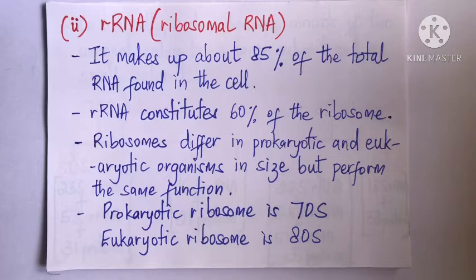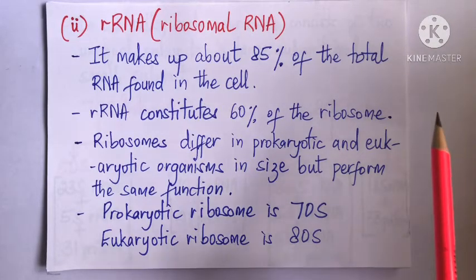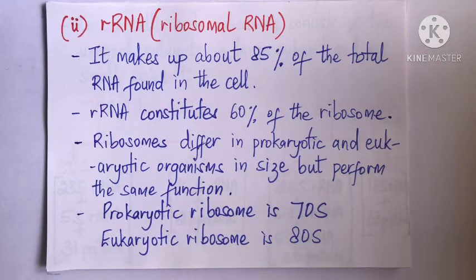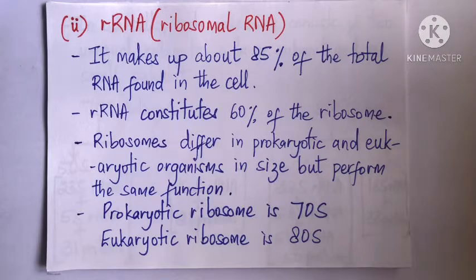Next up is rRNA, which stands for ribosomal RNA. It is one of the most common RNAs, making about 85% of the total RNA in the cell. rRNA is the major constituent of ribosomes, constituting about 60% of the ribosome, while the other 40% are proteins. Ribosomes are one of the key players in protein synthesis and are the actual sites in the cytoplasm where protein synthesis takes place.